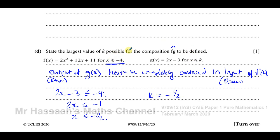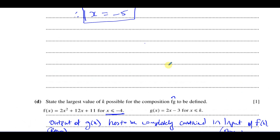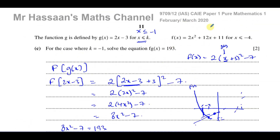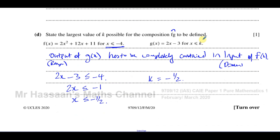Therefore the largest value of k is negative one half. If k is greater than negative one half, some outputs of g will fall outside the domain of f, and the composition cannot be defined. This completes question 9 from the February-March 2020 Pure Mathematics Paper 1 from Cambridge. Other questions from this paper and on quadratics and functions can be found in the playlists shown at the end of the video.